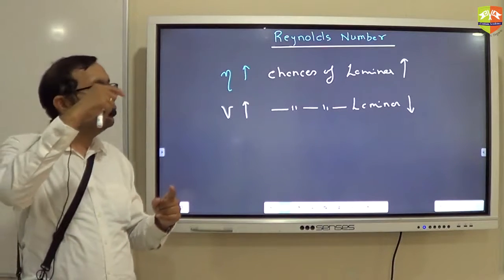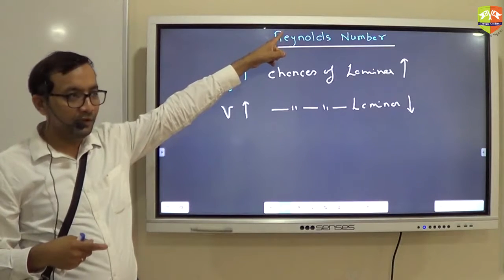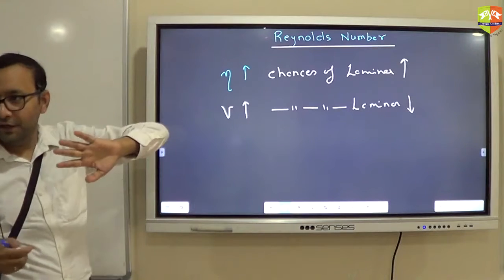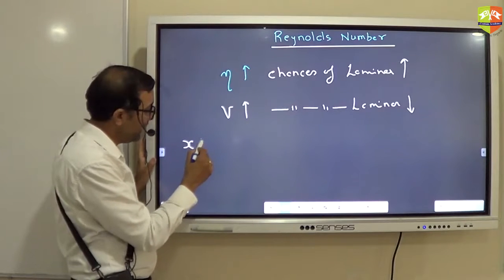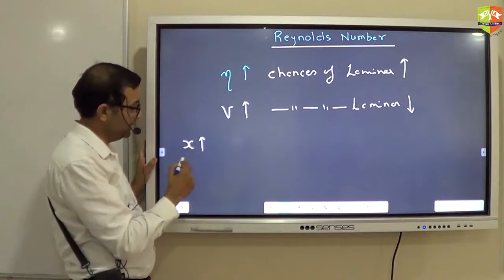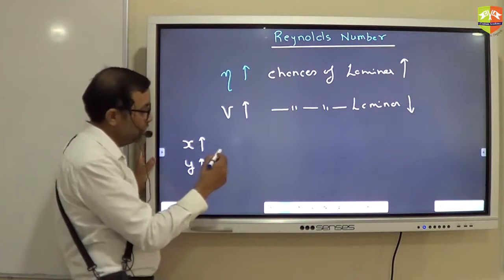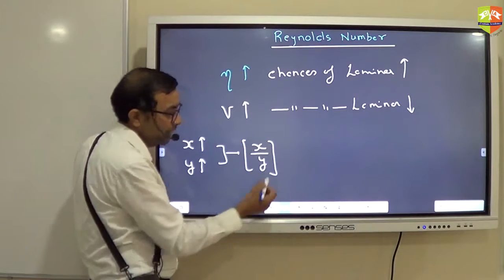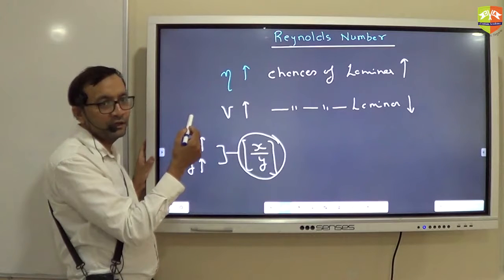So it will become a problem to check both ways. So we are trying to define a third parameter called Reynolds number which will be a function of both of them. Are you getting it? See, what I am trying to say is this: mathematically trying to understand. If I say x increases, chances of turbulence decreases, and if y increases, chances of turbulence increases. So I define a parameter x by y and then I just look at x by y.